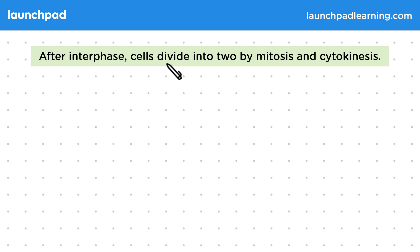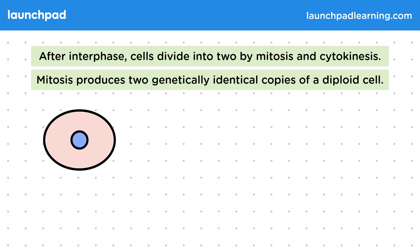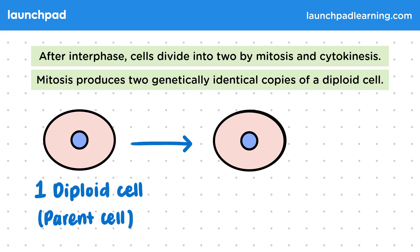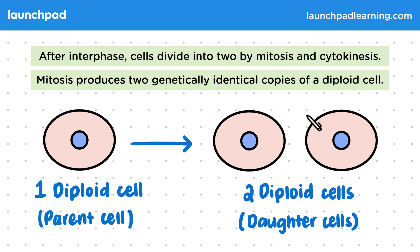After interphase, cells divide into two by mitosis and cytokinesis. Mitosis produces two genetically identical copies of a diploid cell. We have one diploid parent cell which divides into two, producing two diploid daughter cells. Both of these cells are identical and diploid, as they contain the same DNA that was duplicated during interphase.